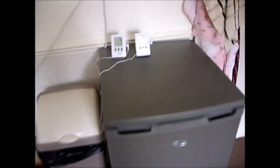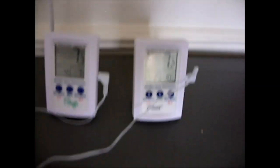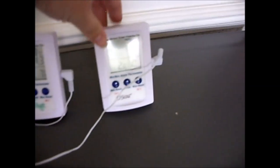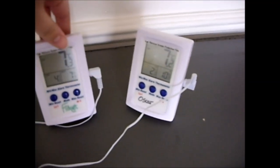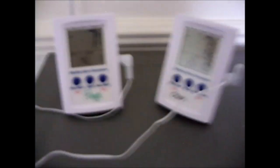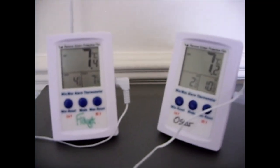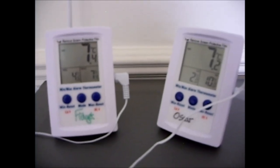This is the fridge that I'm using. It's a new one because last year I had real trouble keeping the temperatures right. As you can see, I've got two max-min thermometers. The temperature at the moment is sitting at around seven degrees in there.